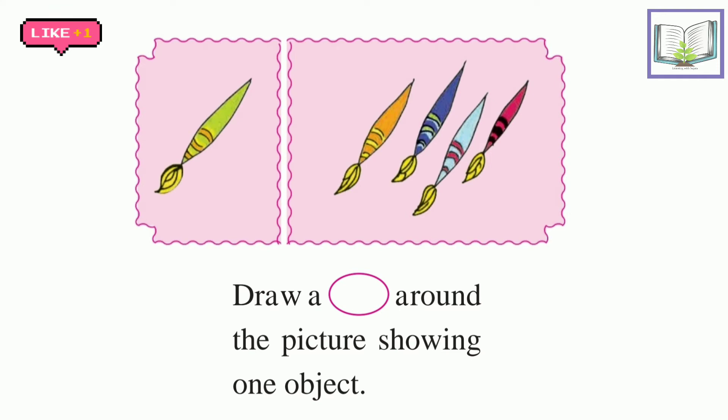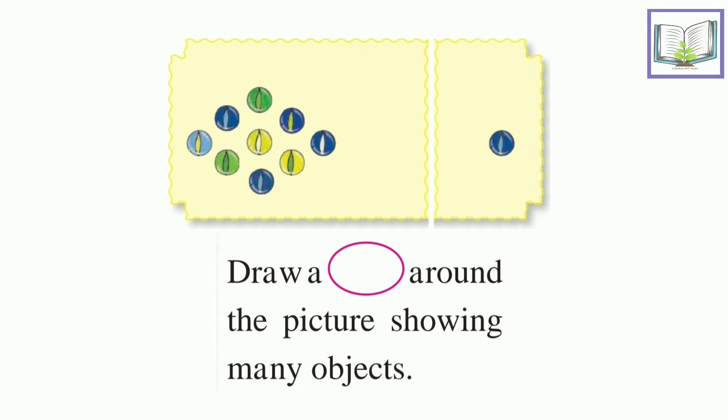Here we have to draw a circle around the picture showing one object. So which picture is showing one object? Right, that is the one object. Let's see another question. Now draw the circle around the picture showing many objects.